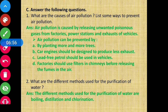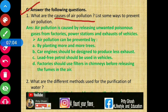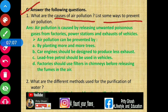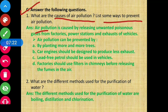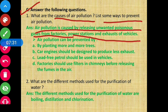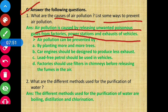Moving on to Section C: Answer the following questions. Question number 1 — what are the causes of air pollution and list some ways to prevent it? Air pollution is caused by releasing unwanted poisonous gases from factories, power stations, and exhaust of vehicles. These are the main causes of air pollution.